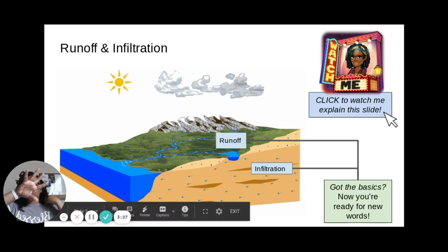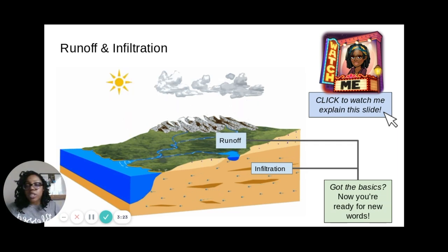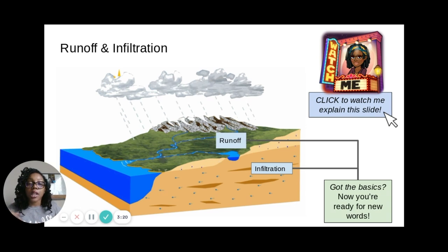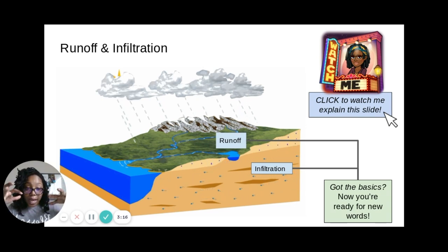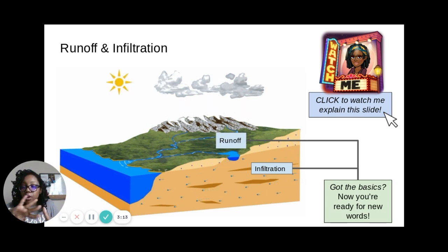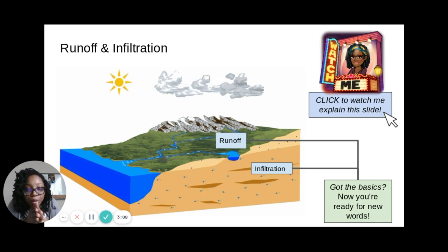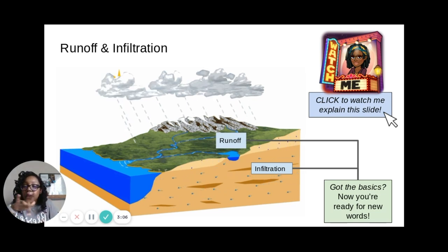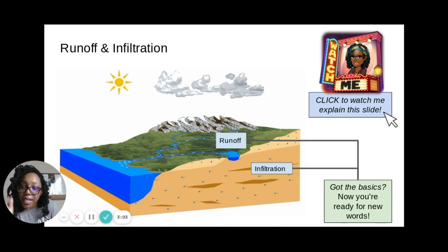So with runoff, water runs off the side of the landscape, washing the surface of the earth and flowing out into the ocean. Infiltration is when that water soaks down into the ground and starts to percolate — which means to basically shimmy through the rocks and stuff — and makes its way to other bodies of water.